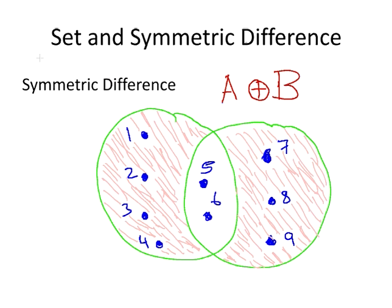It's the area shaded in here pink, so it's 1, 2, 3, 4, 7, 8 and 9. So you could think of it, actually, as the union of the two set differences together.